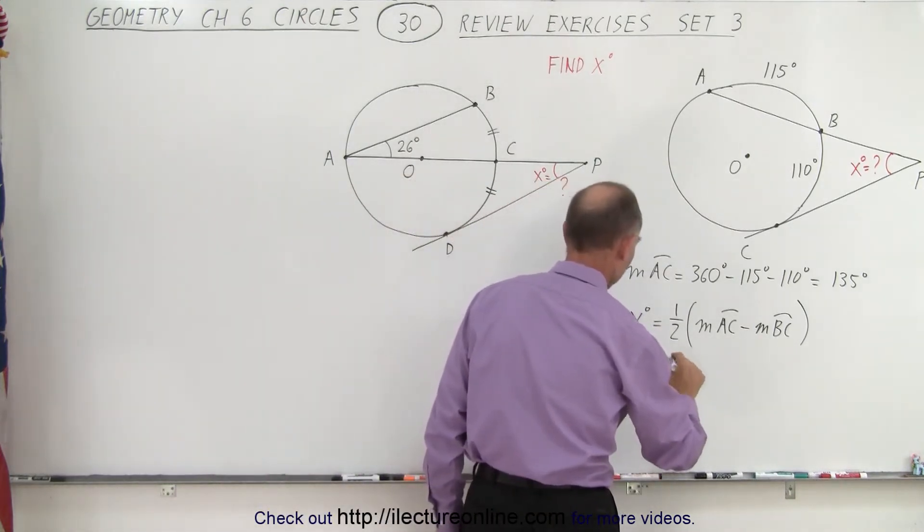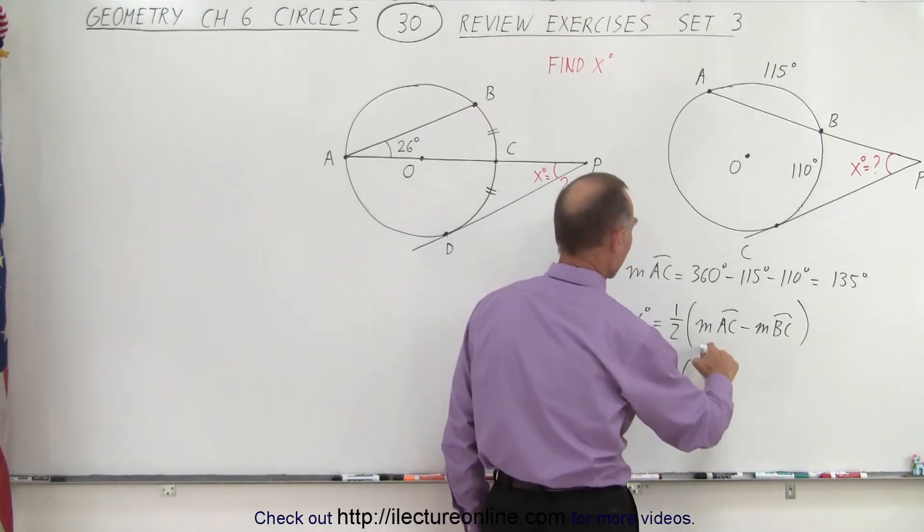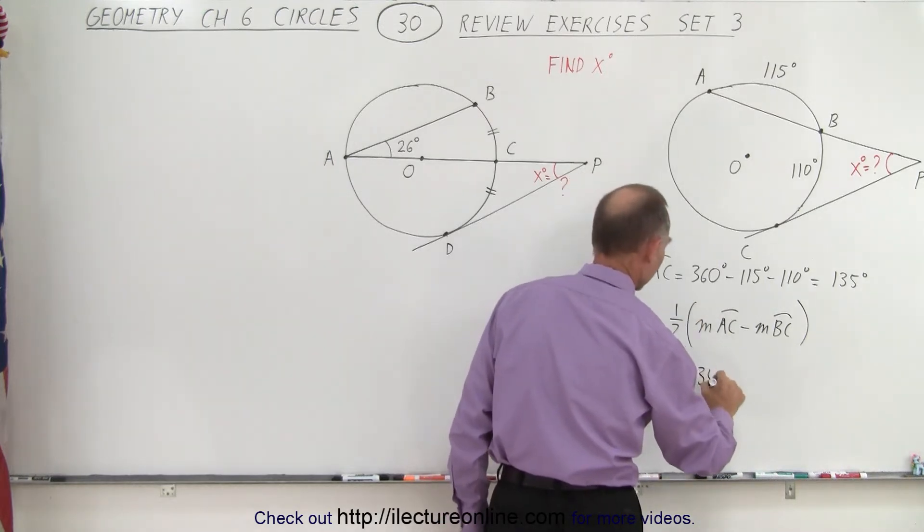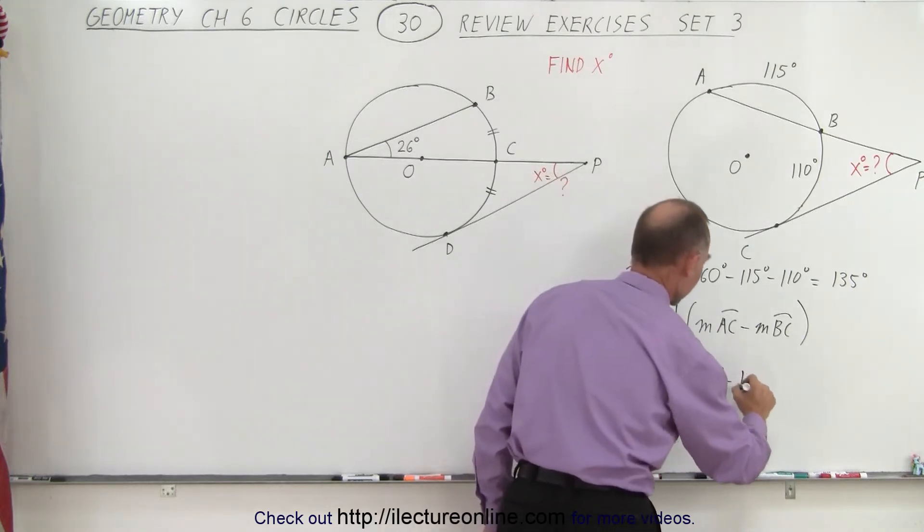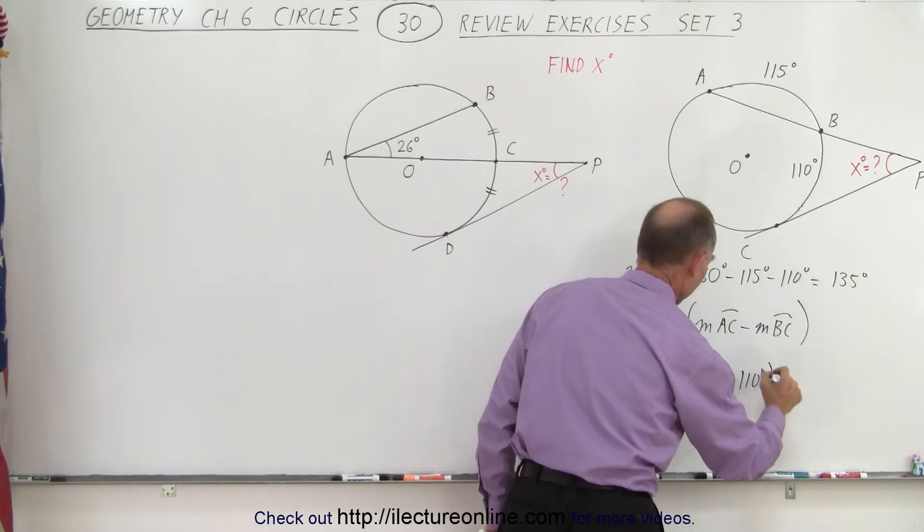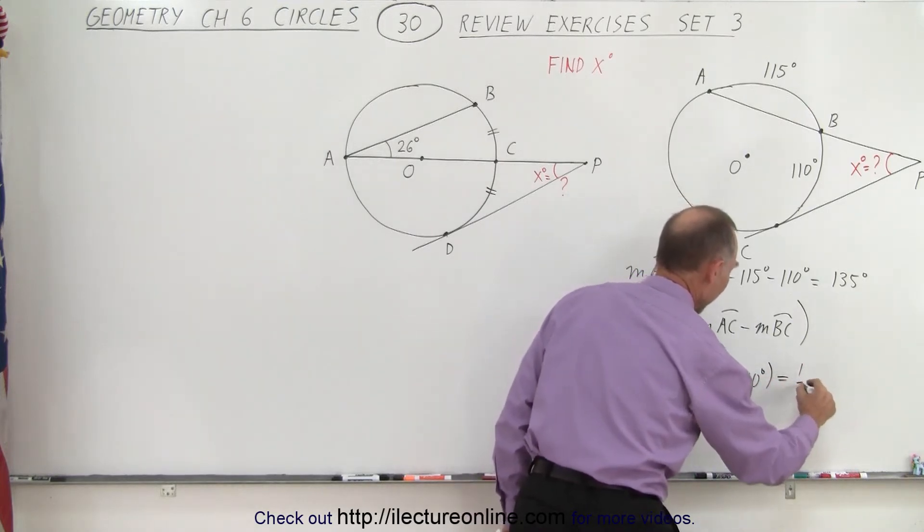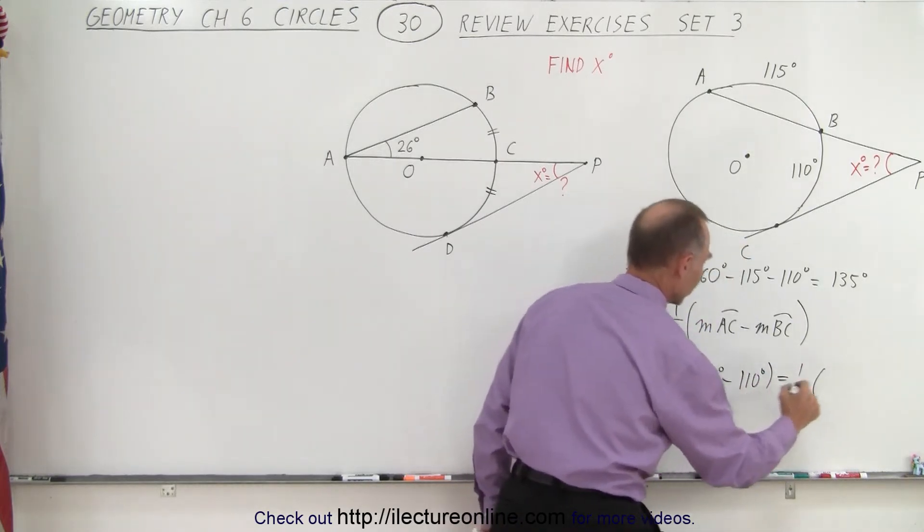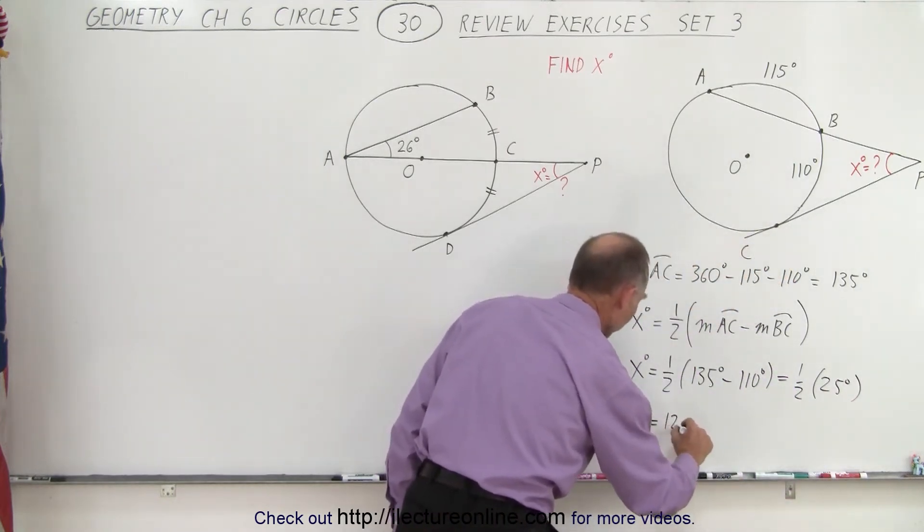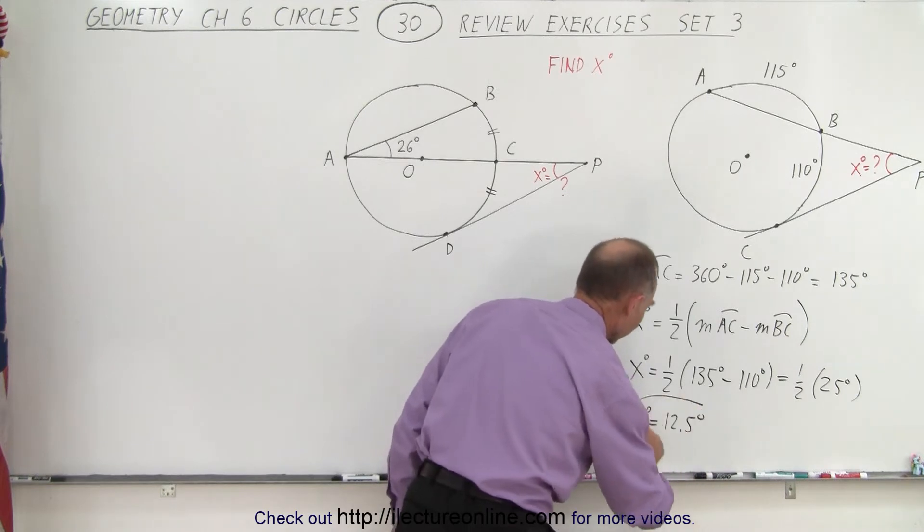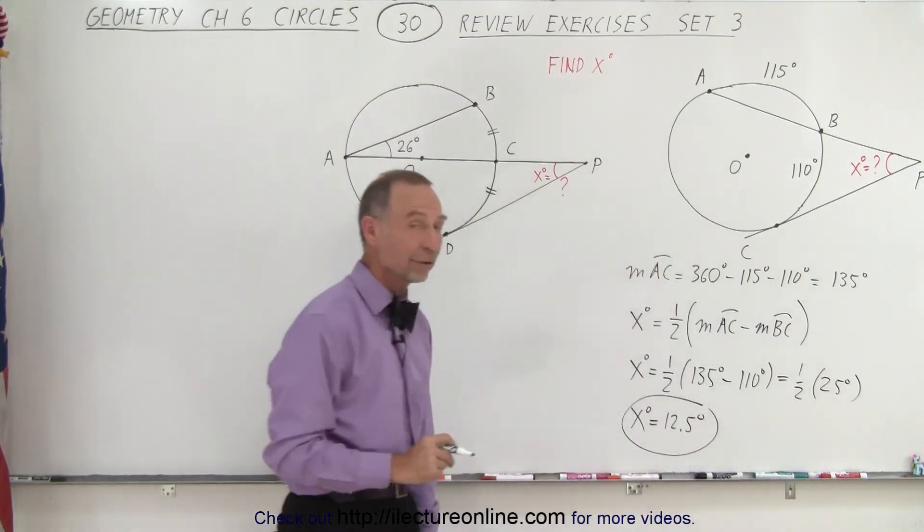So x is therefore equal to one-half times the measure from A to C, which we figured out right here, which is 135 degrees, minus the measure from B to C, which is 110 degrees. So that's equal to one-half times 25 degrees, which of course means that x must equal 12.5. So x degrees equals 12.5 degrees.